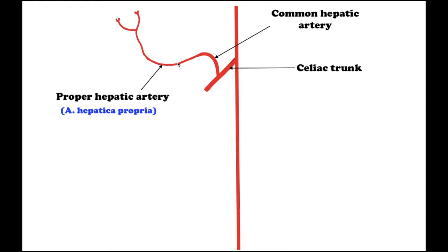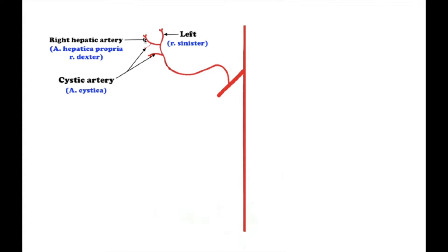Further, it continues as the proper hepatic artery, which lies between the two layers of the hepatoduodenal ligament and reaches the porta hepatis, where it divides into right and left branches, ramus dexter and ramus sinister. The right branch gives rise to an artery to the gallbladder, the cystic artery.